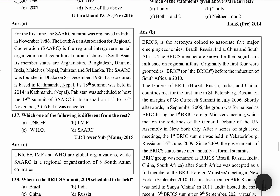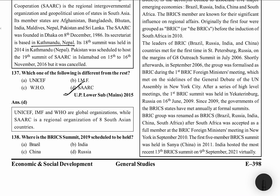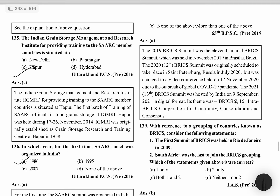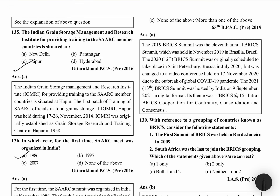Which of the following is different from the rest? SAARC is a regional organization while others are international organizations. Where was the BRICS summit 2019 scheduled to be held? It was held in Brazil. The 2019 BRICS summit was the 11th annual BRICS summit held in Brazil. The 2020 BRICS summit was originally scheduled in St. Petersburg, Russia but changed to a video conference held on 17th November 2020 due to COVID-19 pandemic.